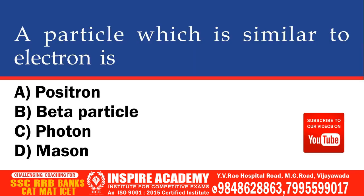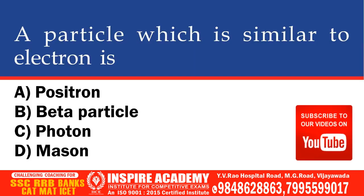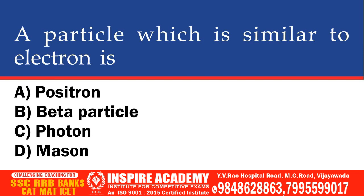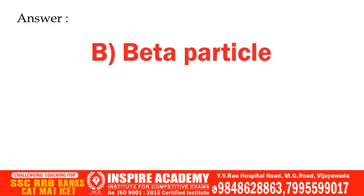A particle which is similar to an electron — options: positron, beta particle, photon. And the correct answer is beta particle.